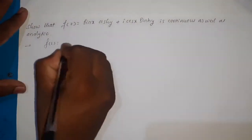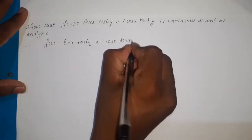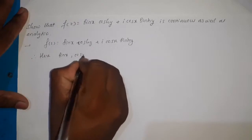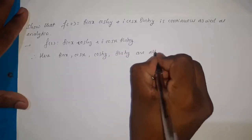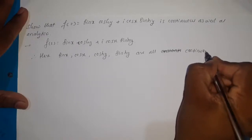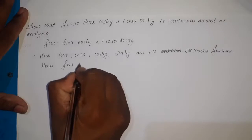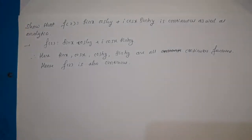Here f(z) = sin(x)cosh(y) + i·cos(x)sinh(y). The functions sin(x), cos(x), cosh(y), and sinh(y) are all continuous. Therefore f(z) is also continuous. All four functions involved in f(z) are continuous, hence f(z) is continuous. Now we need to prove that it is analytic.